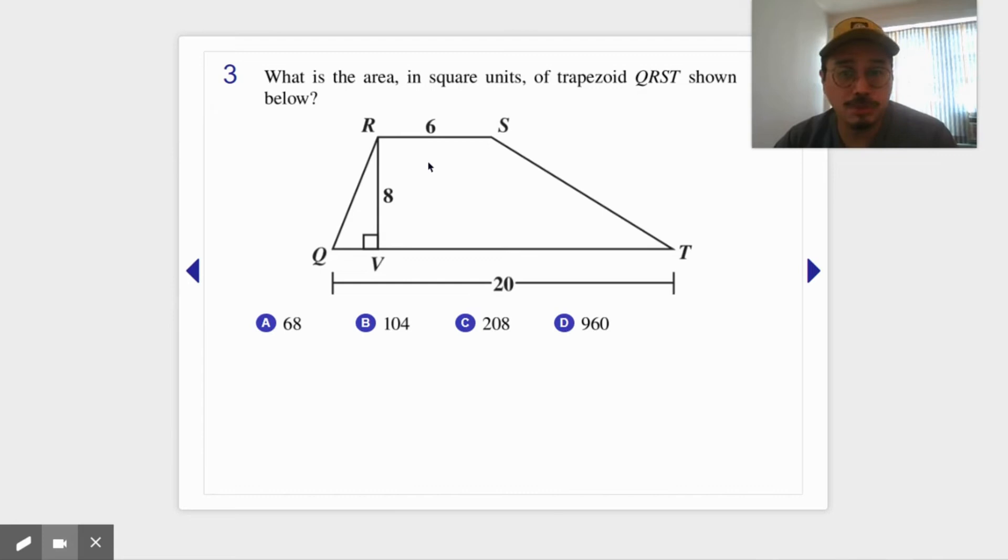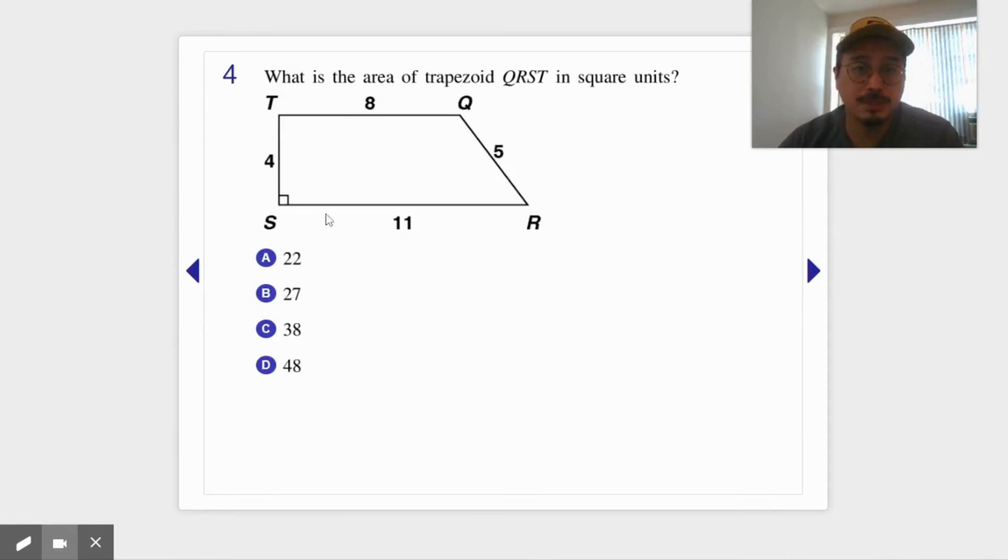So what I'm gonna do is just go ahead and do the question. 20 plus 6 is 26, times 8 is 208, divided by 2 is 104. Next.